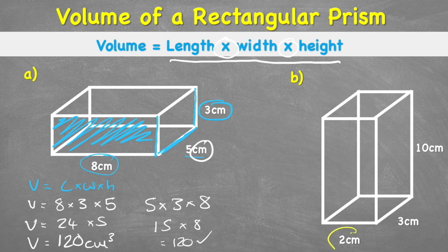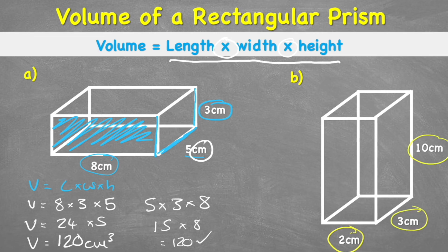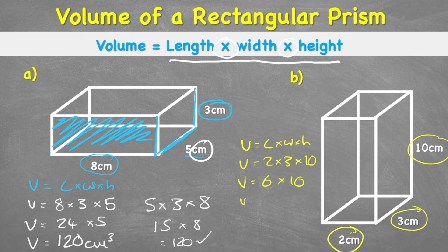Let's look at question two. This time we have two centimeters, three centimeters, and ten centimeters. Volume equals length times width times height, so volume equals two times three times ten, therefore volume equals six times ten, which equals 60 centimeters cubed.